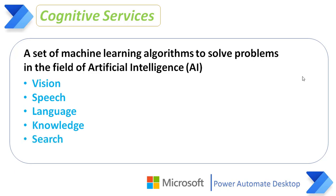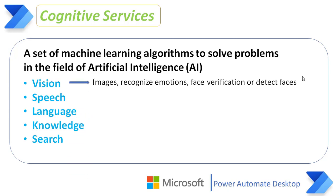Now I will explain each of these cognitive services available in Power Automate Desktop one by one. Starting with Vision — Vision provides algorithms which help to moderate content and build personalized applications by analyzing images, recognizing emotions, face verification, or detecting faces in videos, and many more.